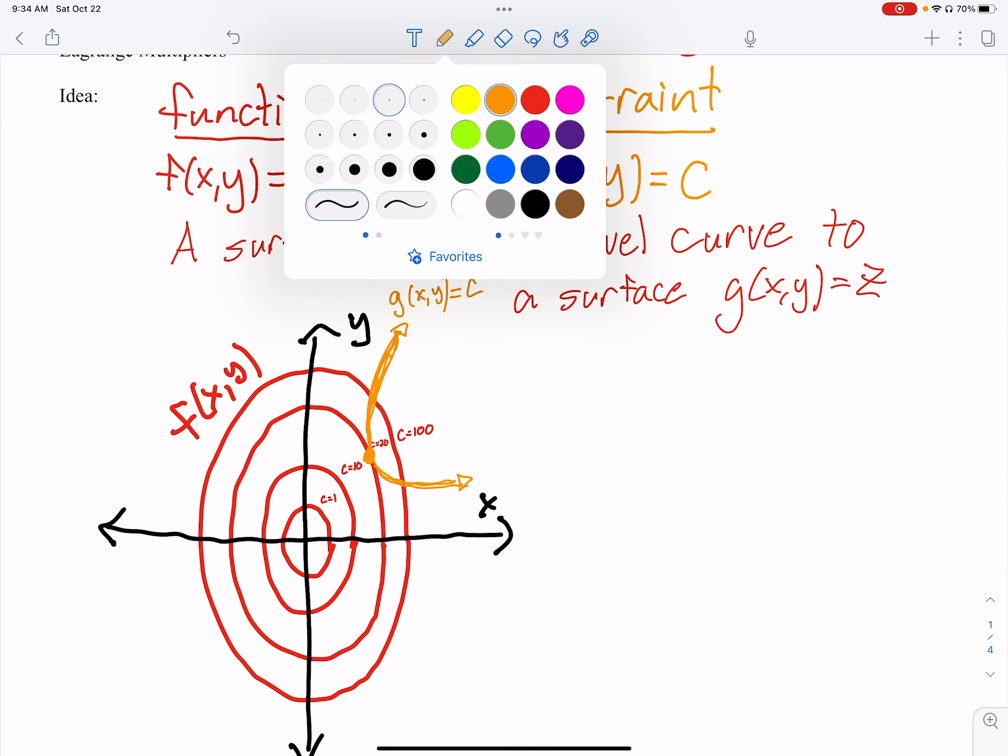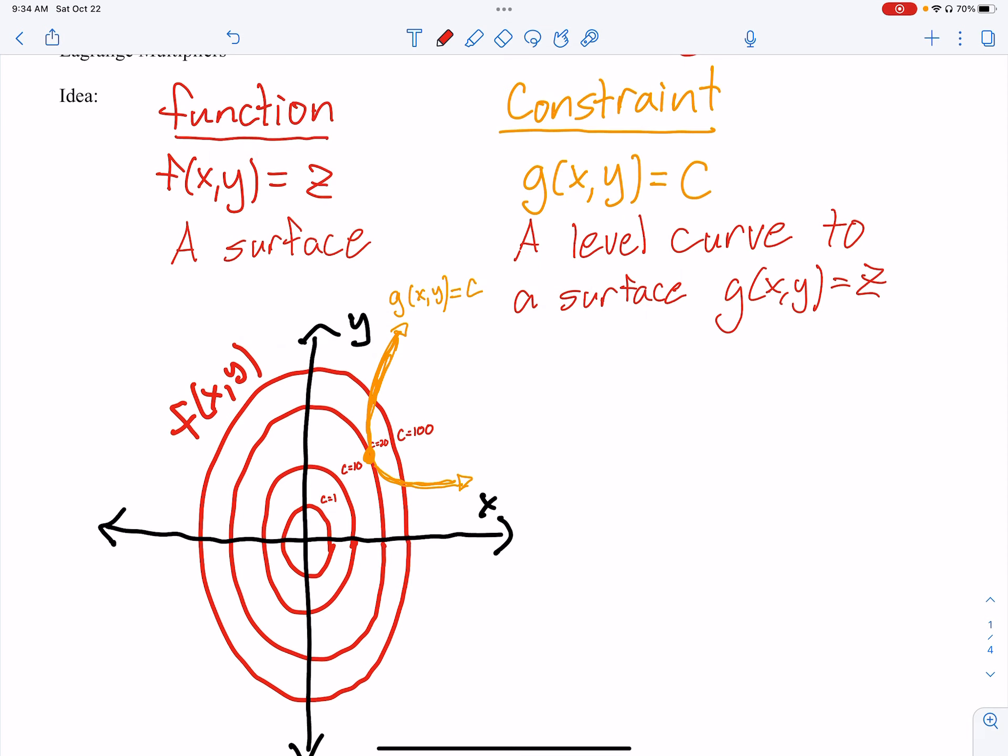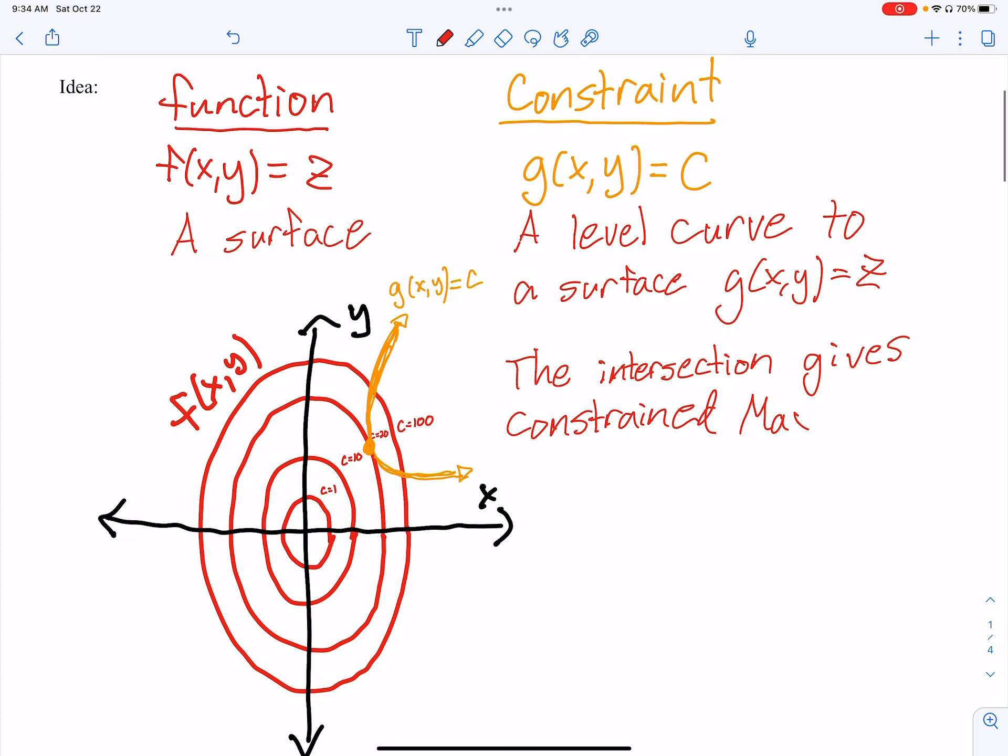So that orange curve will hit an exact line there, and that will be the max because everything, or the minimum in this case, because everything here will be on those curves. It will be higher in the red. It's higher than the orange curve. So the lowest point there will be where we meet here. Now, this intersection, since that's the case, this intersection, let's write this in, the intersection gives the constrained, so that's everything on that orange graph, the intersection between the orange graph and the red graph will give me a constrained max or min.